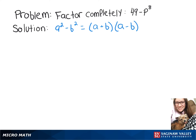We're going to factor 49 minus p to the 8th by using the difference of squares formula. We can rewrite 49 minus p to the 8th as 7 squared, because 7 squared is 49, minus p to the 4th squared. Because in that case you would multiply the exponents, so 4 times 2 gives you 8.